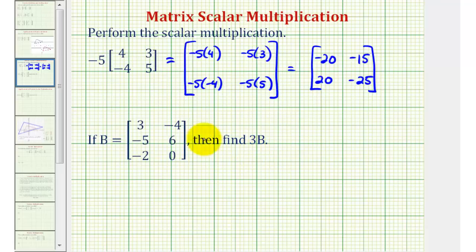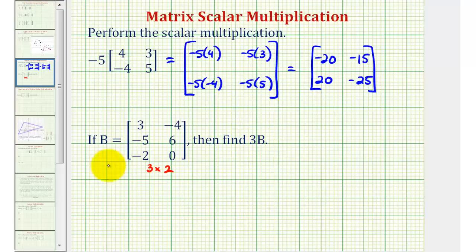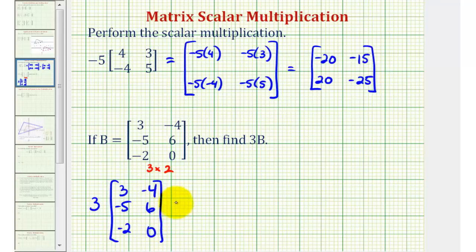In the second example, we're given matrix B, which is a three by two matrix, and we're asked to find three times B, which is another way to express scalar multiplication. This means three times our three by two matrix, so now we're going to multiply each element of the matrix by positive three.